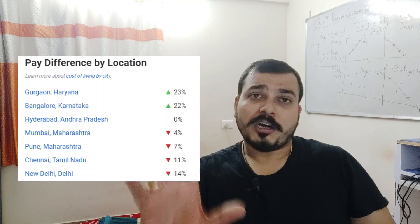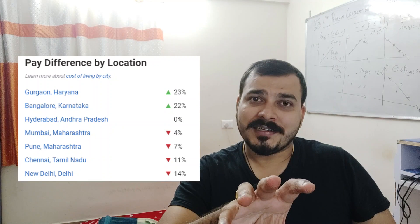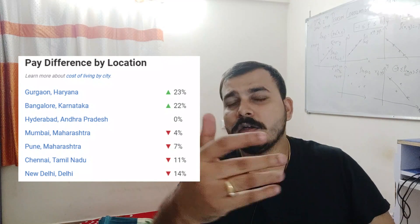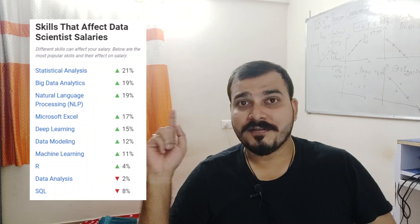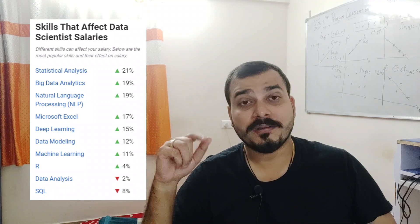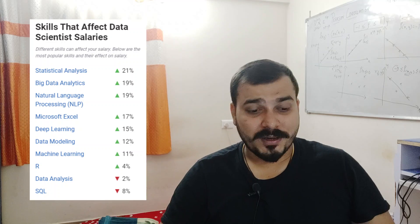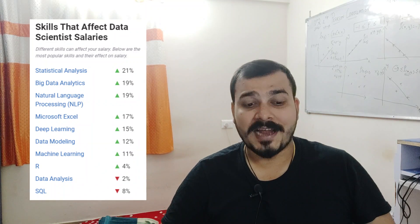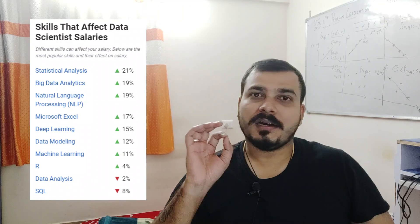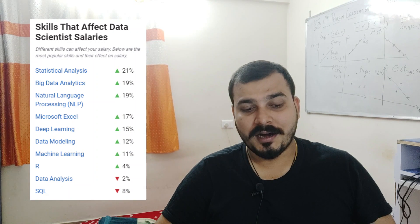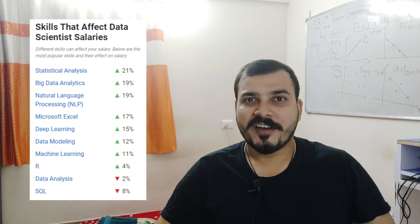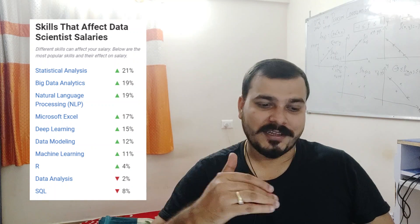There are also specific skills that can significantly affect your data scientist salary. If you have statistical analysis skills, your salary tends to increase by more than 21%. Big data analytics adds around 19% more. Natural language processing is one of the hottest topics currently in machine learning and deep learning. Deep learning, data modeling, and machine learning also contribute positively, while data analysis and SQL have become very common and are on the lower end.